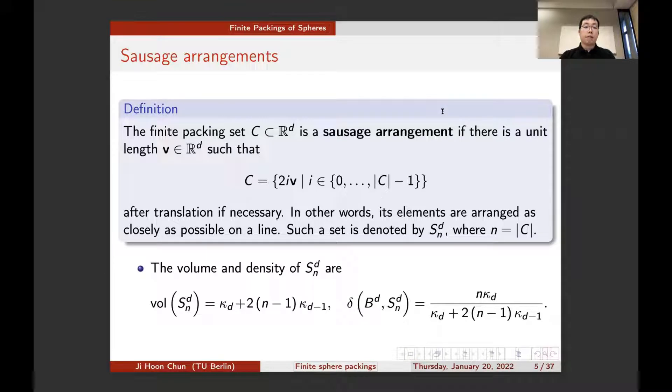We'll be looking at a certain kind of packing throughout this talk. We say that a finite packing is a sausage arrangement if the points of the packing set are placed as closely as possible on a single line. We denote this set by S_{n,d}. From construction, the volume and density are as follows.